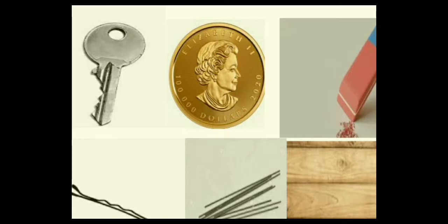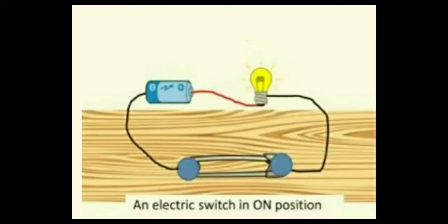Let us now try to identify objects which are conductors and insulators. Now let us take the circuit. Remove the safety pin which is placed here. Now insert different objects like coin, eraser, plastic scale, hairpin, pencil lid, etc., and check whether the bulb glows or not.